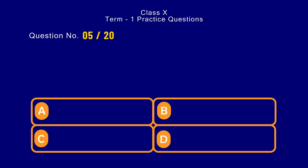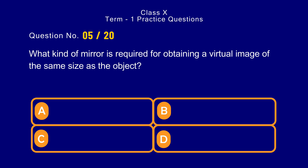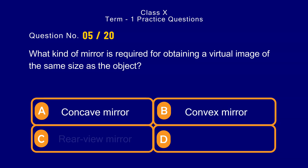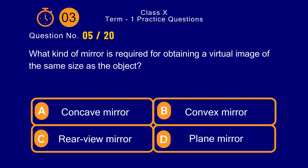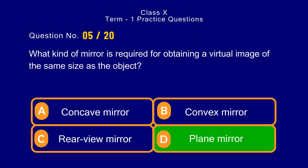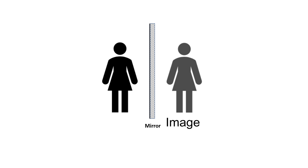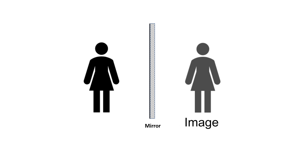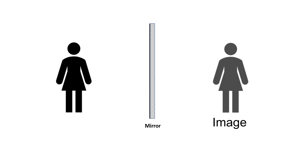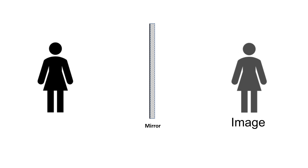Question number 5. What kind of mirror is required for obtaining a virtual image of the same size as the object? Options: a) concave mirror, b) convex mirror, c) rear view mirror, d) plane mirror. The correct answer is option d) plane mirror. A plane mirror forms an image which is of the same size as the object. No matter how far the object is, it always forms the same size image.